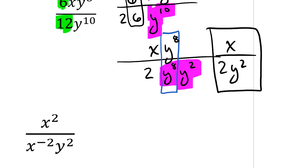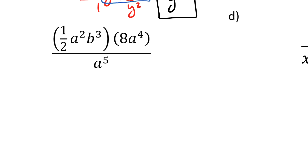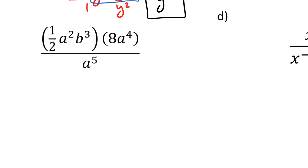For part c, let's go ahead and deal with the numerical parts first here. I've got a 1 half and I've got an 8. And there's just a factor of 1 in the denominator. So 1 half times 8 is 4. So I know right off the bat I'm going to have a value of 4 in my numerator.